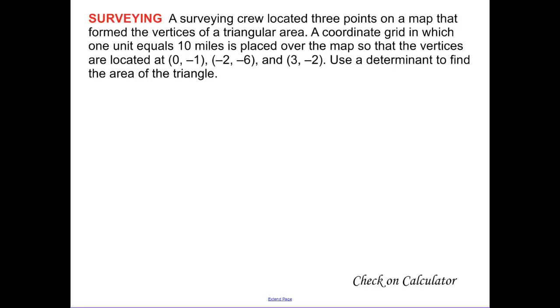This example: a surveying crew located three points on a map that form the vertices of a triangular area. A coordinate grid where one unit equals 10 miles is placed over the map so the vertices are located at those points. Use the determinant to find the area. Lay out 0, negative 1, the last column is 1, negative 2, negative 6, and 1, and 3, negative 2, and 1.